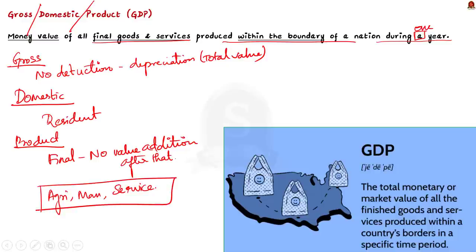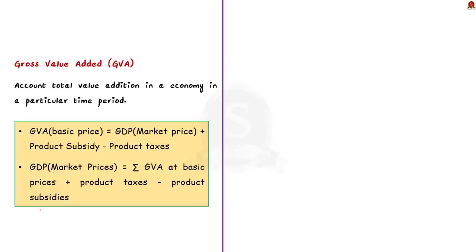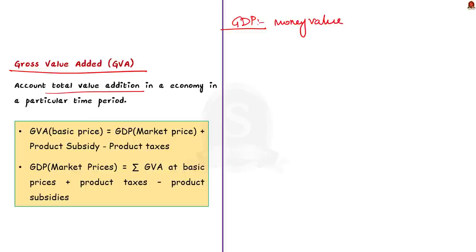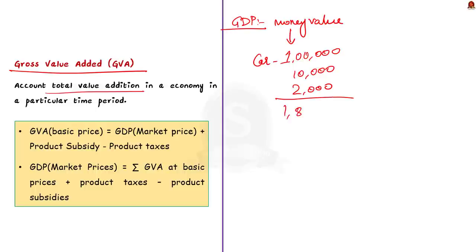Now moving on to GVA, or gross value added. As the name suggests, GVA is used to calculate the total value added. To understand the need for GVA, you must know the fault with GDP. In GDP, we calculate the total money value of all goods and services produced within a country's domestic boundary, and that money value includes indirect tax and does not include subsidies. For example, consider a car manufactured in the economy. The price of the car is 1 lakh — this is the basic price. The government imposes a tax of 10,000 and provides a subsidy of 2,000, so the final market value of the car is 1 lakh 8,000 rupees.